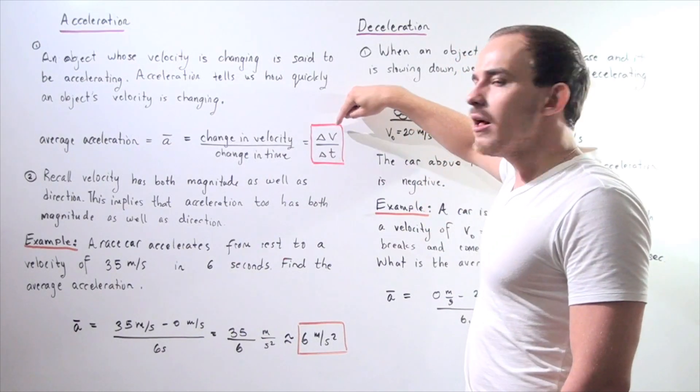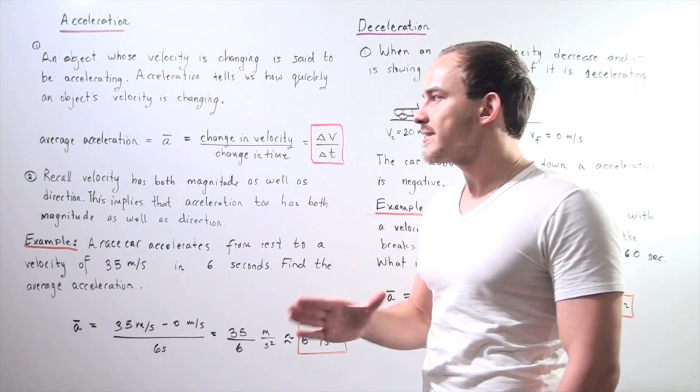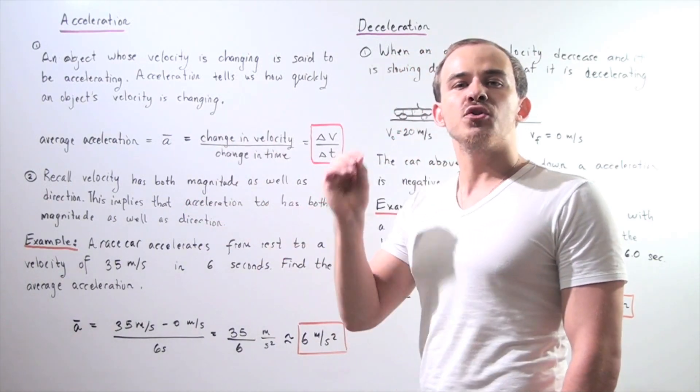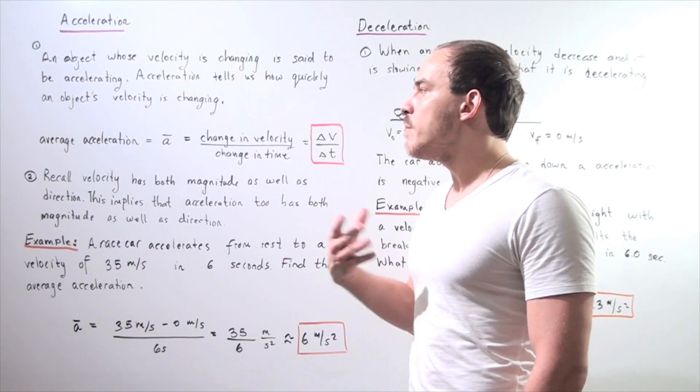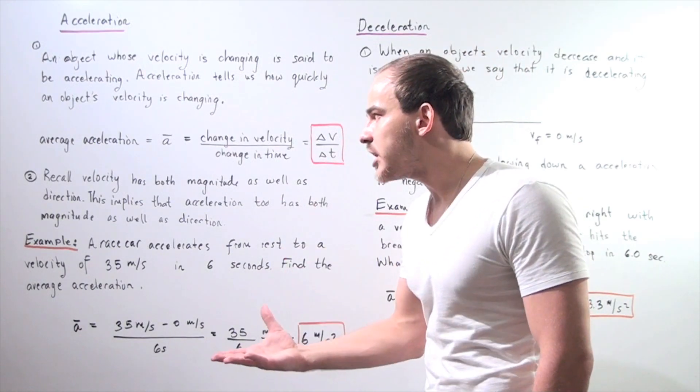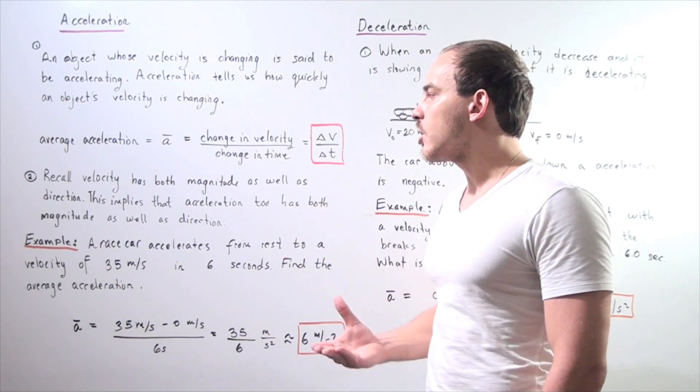Now recall that velocity has both magnitude as well as direction, and this implies that acceleration too has both magnitude as well as direction. So whenever we specify our numerical value for acceleration, we also have to specify in which direction our object is accelerating.